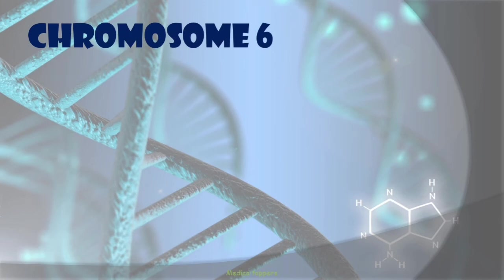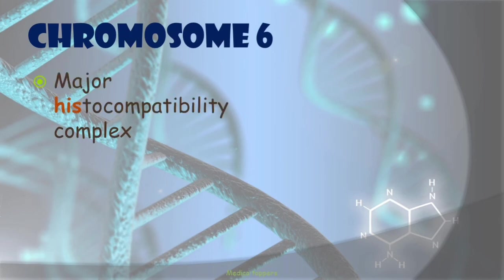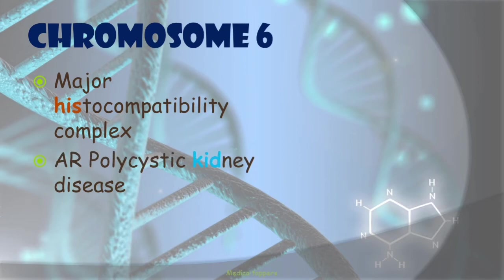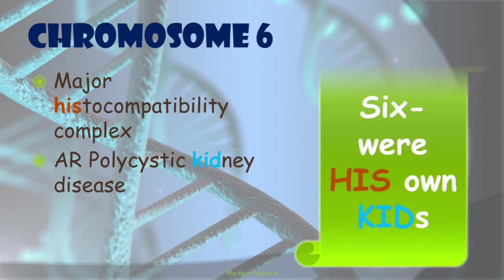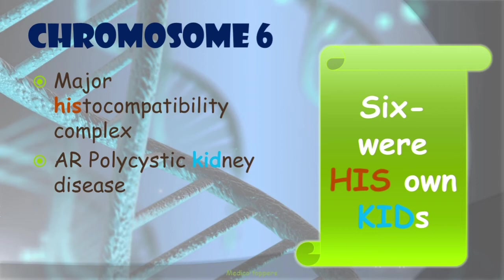Now comes chromosome 6, associated with the major histocompatibility complex and autosomal recessive polycystic kidney disease (ARPKD). Don't confuse this with autosomal dominant PCKD, which is chromosome 16. The mnemonic: '6 where his own kids were very poor' — 'his' is for histocompatibility complex and 'kids' is for autosomal recessive PCKD.